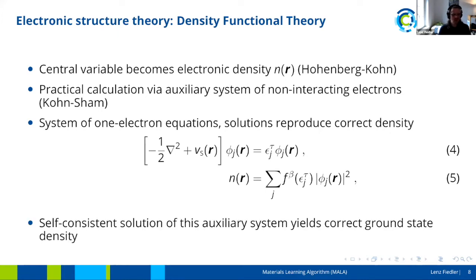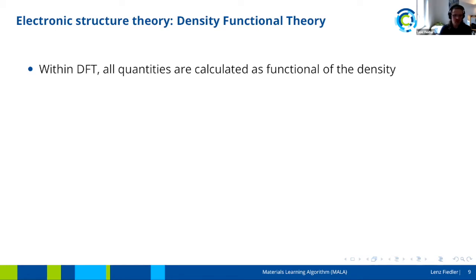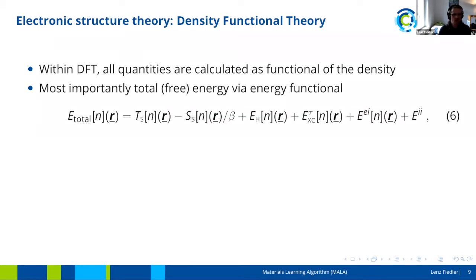This system is solved self-consistently: the wave functions are solved, the density is calculated, the effective potential is updated, and all of this is done iteratively until the correct ground state density is identified. Within DFT, all quantities can be calculated as a function of the density. If we can calculate the correct ground state density, we have access to many other quantities, the most important being the total free energy, which is also commonly used to stop the self-consistent iteration.